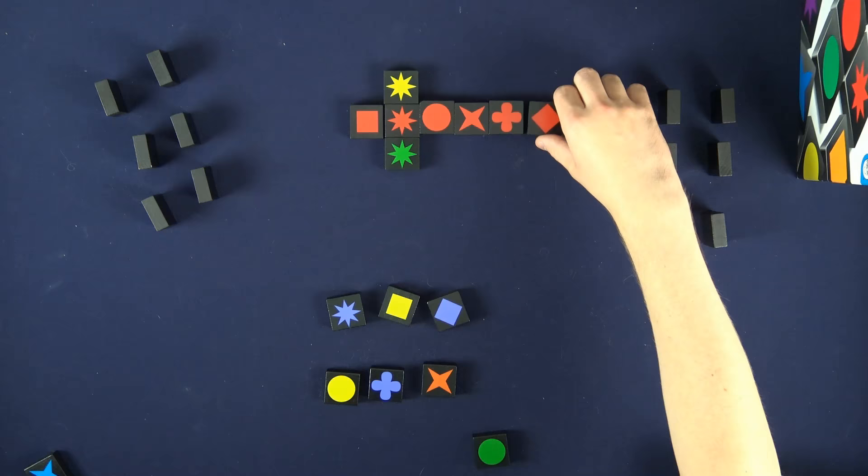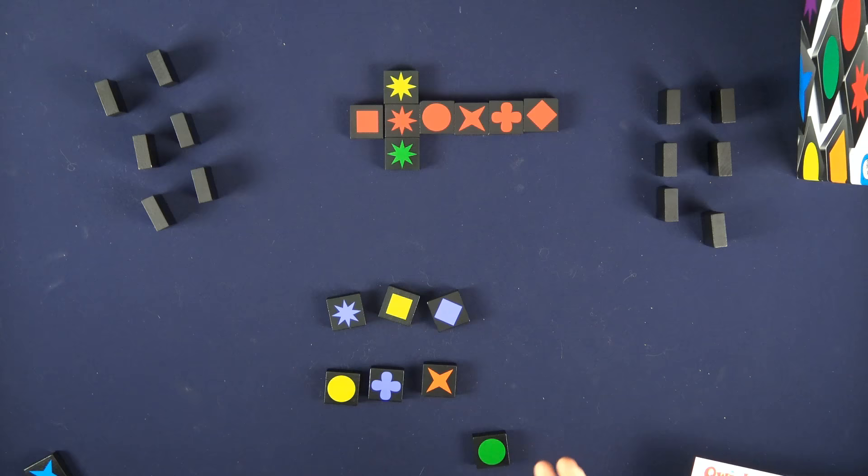If you complete a row of all six tiles like so that's called a qwirkle, so you would get six points for that as well as a bonus of six points for completing that line.